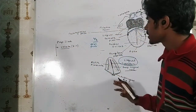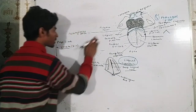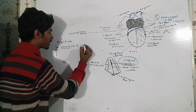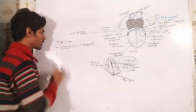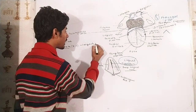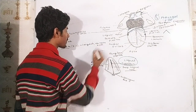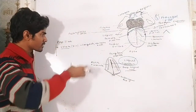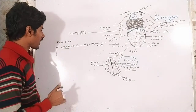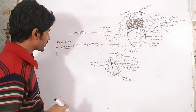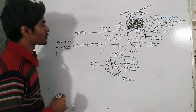The vallate papillae are the largest papillae on the dorsal surface. Each papilla contains up to 100 taste buds. They are cylindrical projections surrounded by a sulcus, and the taste buds are present on their walls. The vallate papillae are very important for taste perception.